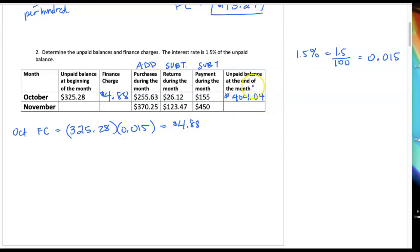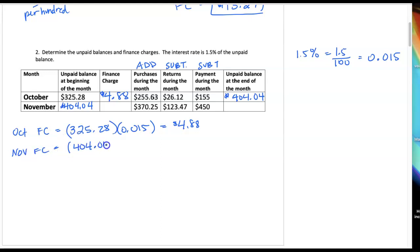That's where we end October and that's also where we start November — $404.04. Think October 31st right into November 1st. Find our finance charge; this is the November finance charge. We're going to take that November unpaid balance at the start of November times our decimal equivalent, and I get a finance charge of $6.06.